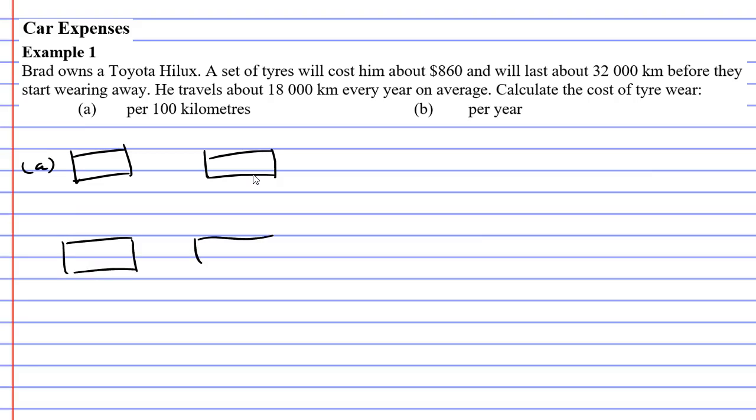We've got four boxes, three numbers and two arrows to do this. What we're going to do is notice that it costs $860 for the set of tyres and they will last about 32,000 kilometres. So that means 32,000 kilometres will cost you $860.